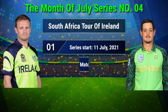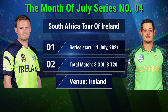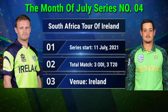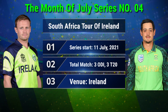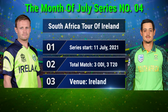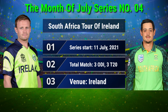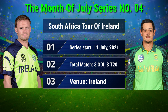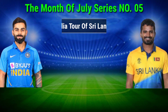Series No. 4: South Africa Tour of Ireland. Series starts 11 July 2021. Total matches: 3 ODI and 3 T20. Venue: Ireland.